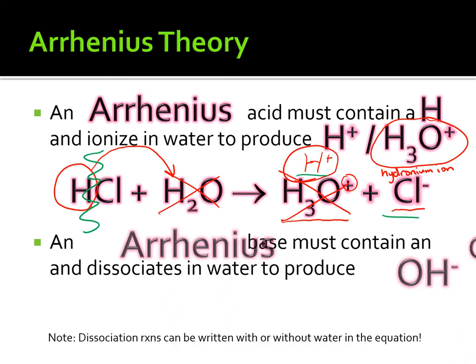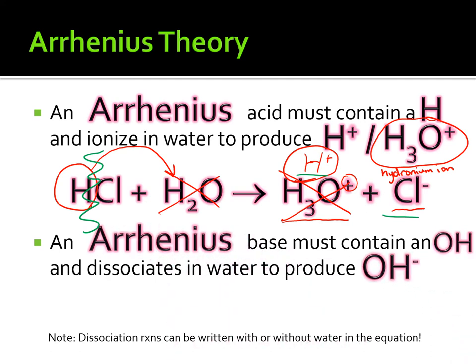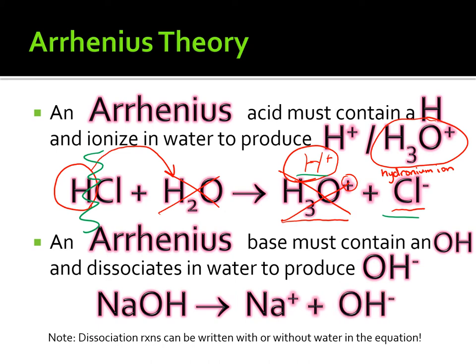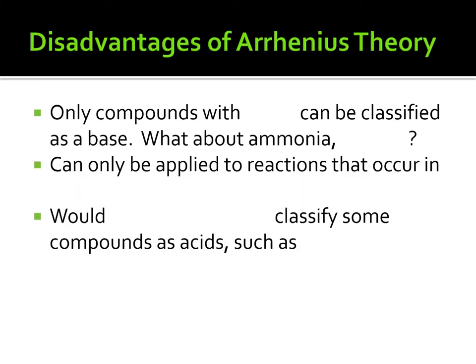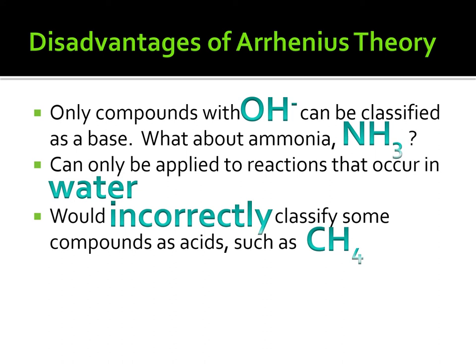An Arrhenius base must contain OH, or produce hydroxide ions when dissolved in water. We can simplify the base definition to: a compound that ends in OH. Our example: NaOH splits into sodium ion and hydroxide ion. A special note: dissociation reactions can be written with or without water in the equation. Unfortunately, the Arrhenius definition excludes several compounds from being correctly classified as acids or bases, so we need a better definition.